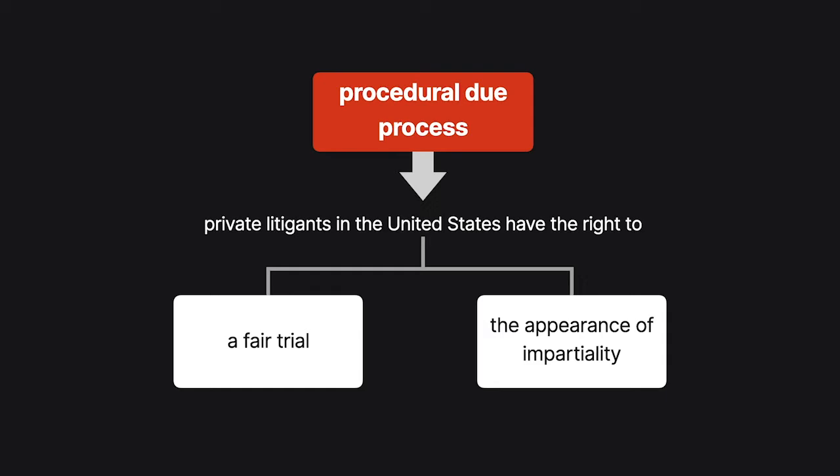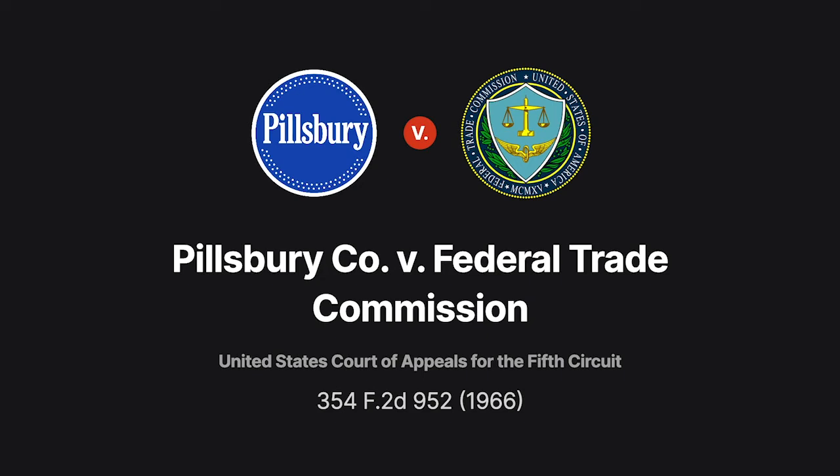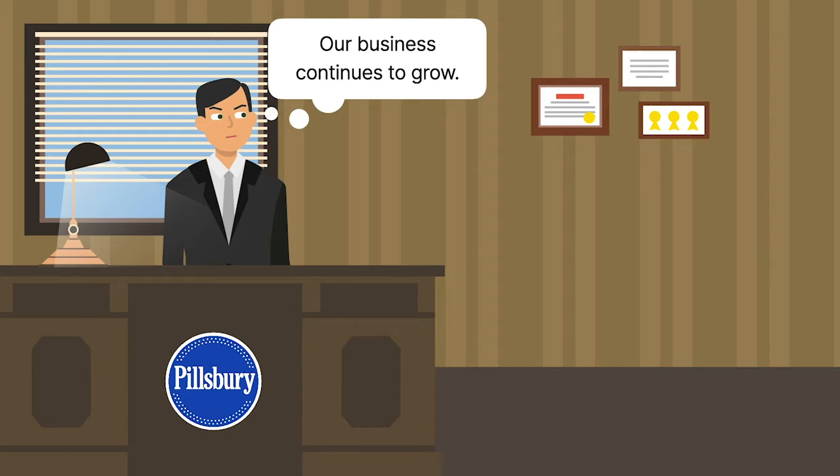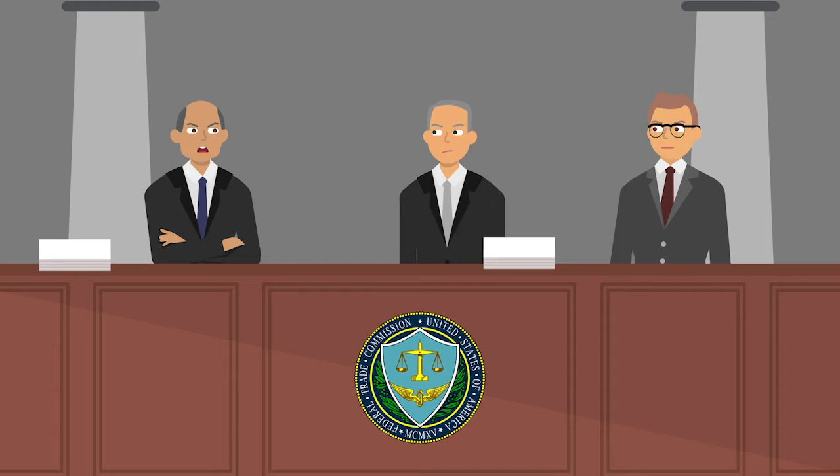The Fifth Circuit considered whether congressional interference with agency decision-making violated procedural due process and required reversal of the agency's order, in Pillsbury Company v. Federal Trade Commission. In 1951 and 1952, the Pillsbury Company acquired two leading competitors in the baking products business. The acquisition became the focus of Federal Trade Commission, or FTC, proceedings under amended Section 7 of the Clayton Act.